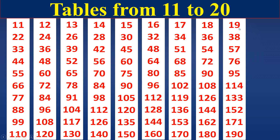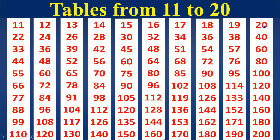19 times table. 19 ones are 19. 19 twos are 38. 19 threes are 57. 19 fours are 76. 19 fives are 95. 19 sixes are 114. 19 sevens are 133. 19 eights are 152. 19 nines are 171. 19 tens are 190.